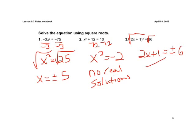And this is where we need to branch off and do two problems. We have 2x plus 1 equals positive 6, and 2x plus 1 equals negative 6. And now we're just solving for x.